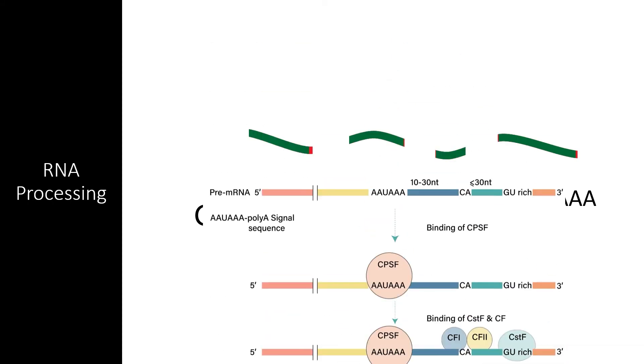Thus, with the introns spliced out, a GTP head, and a poly-A tail, the mRNA molecule is ready to leave the nucleus and be translated. Keep in mind that other forms of RNA, including tRNA and ribosomal RNA, also have specific post-transcription processing that folds them into the right shape and adds various elements.